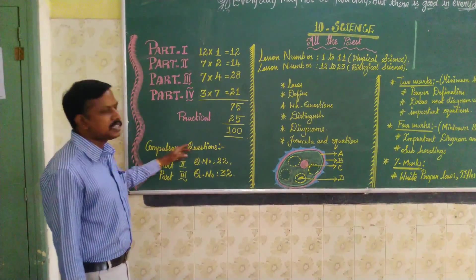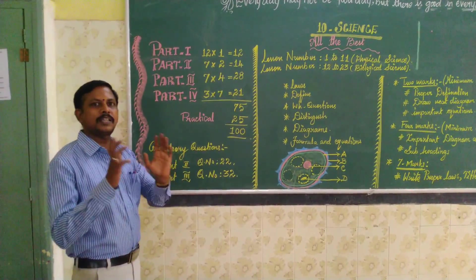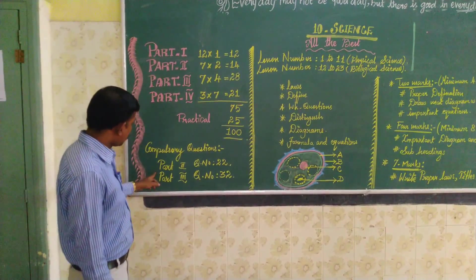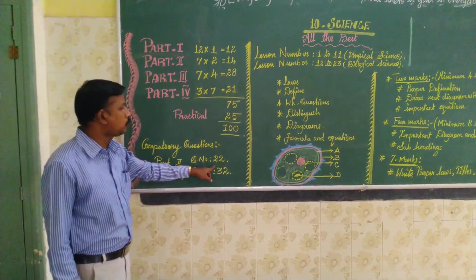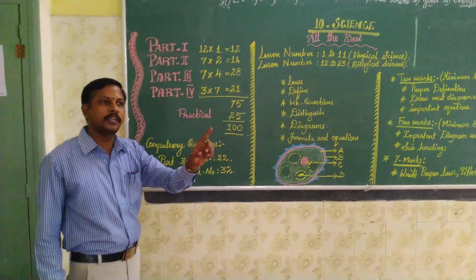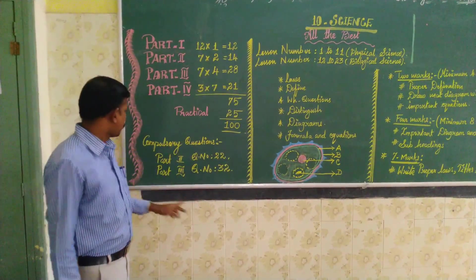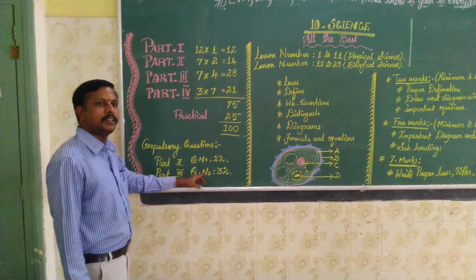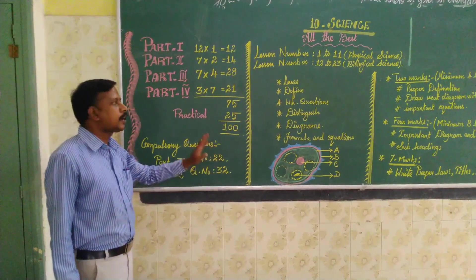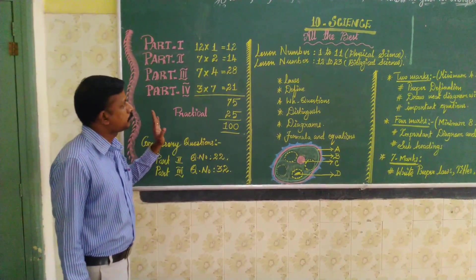Next, compulsory questions. What are the compulsory questions? In Part 2, question number 22 is a compulsory question. And in Part 3, question number 22 is also a compulsory question.